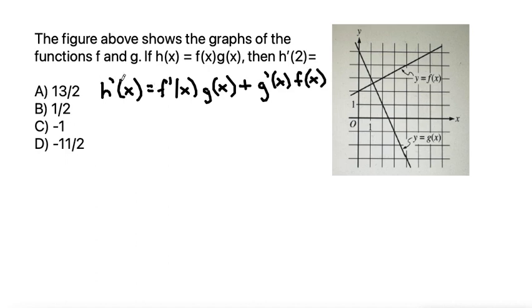So this is my h prime of x, but the problem wants me to find h prime of 2. So next I will substitute a 2 for everywhere I see x in the problem. So that's h prime of 2 is equal to f prime of 2 times g of 2 plus g prime of 2 times f of 2.